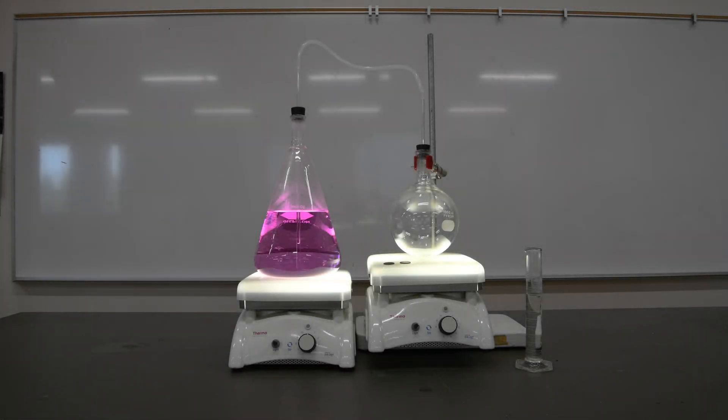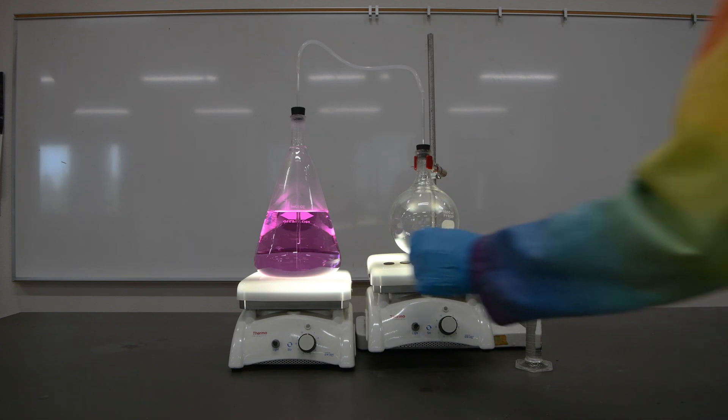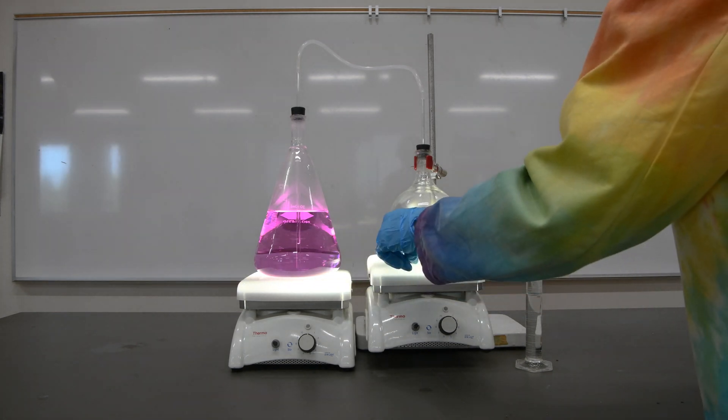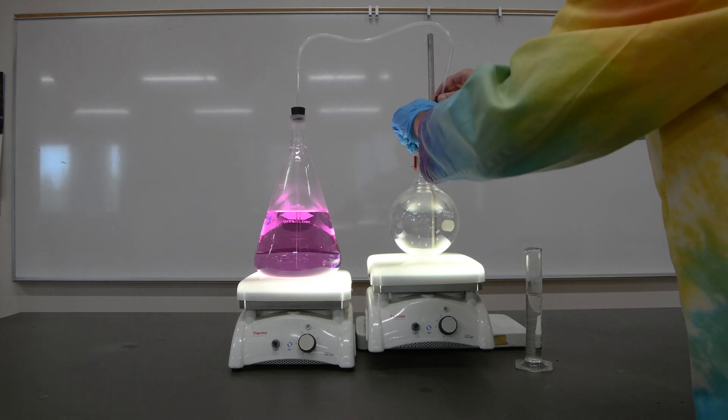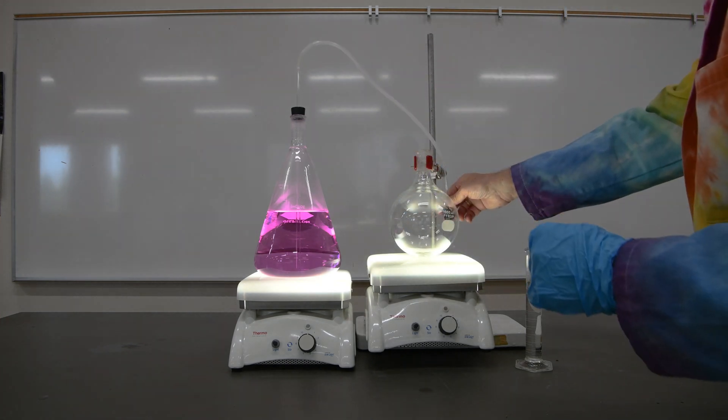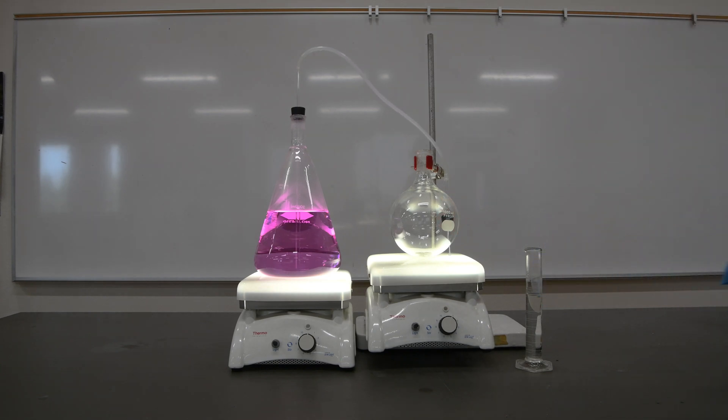All right, the first thing we'll want to do is to put two pennies into our round flask. These are old pennies before 1983, when pennies were still made of copper. You have to make sure you use a penny before 1983.